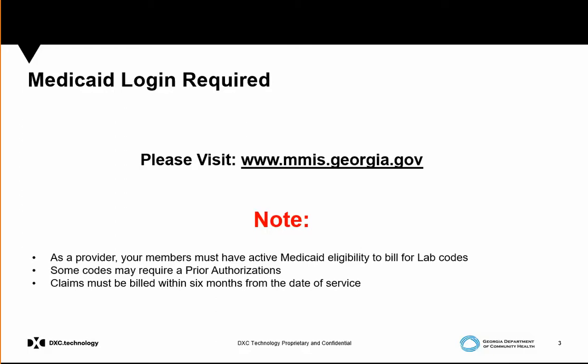In order to submit any claims to Medicaid, request a prior authorization, or check eligibility, this all must be done through our website at www.mmis.georgia.gov. As a provider, you must check eligibility any time you see a Georgia Medicaid member. Some procedure codes may require a prior authorization, and claim submissions must be received within six months from the date of service. These are three components that must be verified every time you see a Georgia Medicaid member.